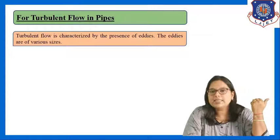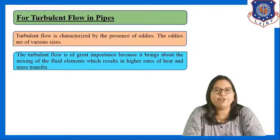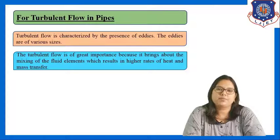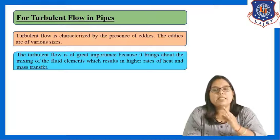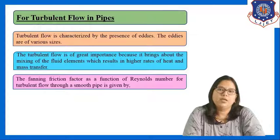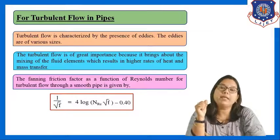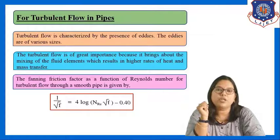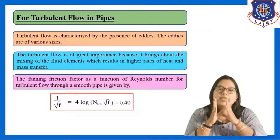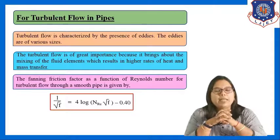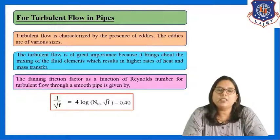Turbulent flow is characterized by the presence of eddies of various sizes. It is of great importance because it brings about mixing of fluid elements, resulting in a higher rate of heat and mass transfer. The empirical relation for friction factor as a function of Reynolds number for turbulent flow through a smooth pipe is: 1/√f = 4·log(N_Re·√f) − 0.4.